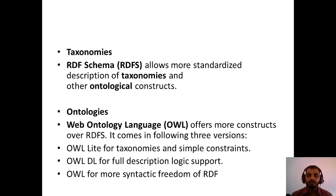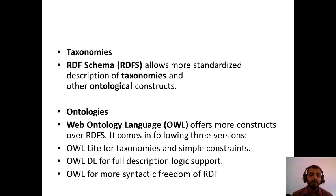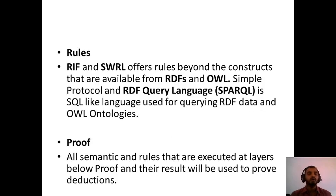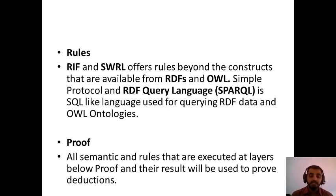Web Ontology Language offers more constructs over RDFS. It comes in three versions: OWL Lite for taxonomies and simple constraints, OWL DL for full description logical support, and OWL for more syntactic freedom of RDF. With reference to rules, RIF and SWRL offer rules beyond the constructs available from RDF and OWL. SPARQL, a Simple Protocol and RDF Query Language, is like SQL used for querying RDF data and OWL ontologies. All semantic rules executed at layers below proofs and their results will be used to prove the deductions.